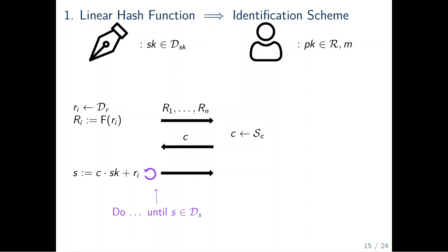The signer then calculates S as C scalar multiplied with sk plus R. Here, the circular arrow denotes that this operation is repeated until S is in its respective filter set. Without this check, value S may leak information about the secret key. With high probability, this check will be true for at least one value R. Thus, by choosing an appropriate dimension of vector R, we achieve negligible correctness error. The signer ends its execution by sending S over the channel.